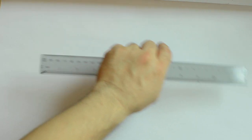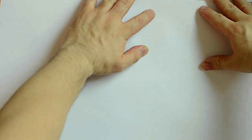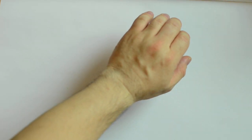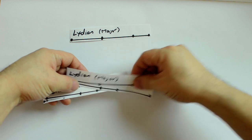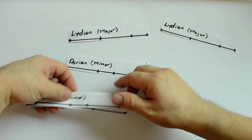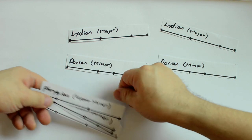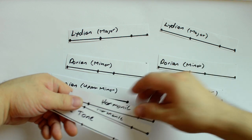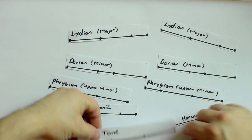I've built these little mini tetrachords on pieces of paper. These are Lydian, Dorian, Dorian, Phrygian, Phrygian, Harmonic, Harmonic, and Whole-tone.